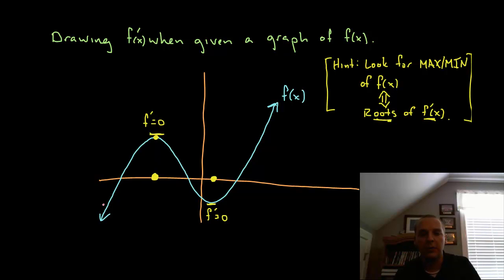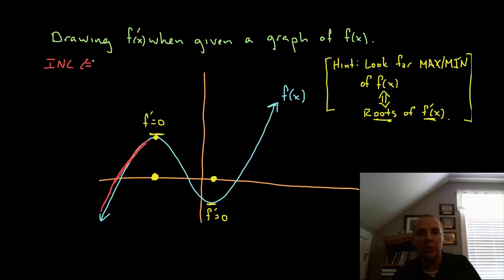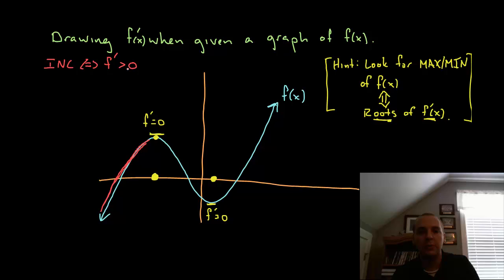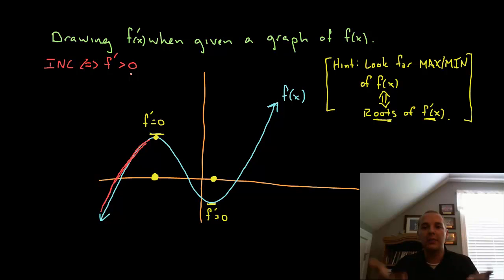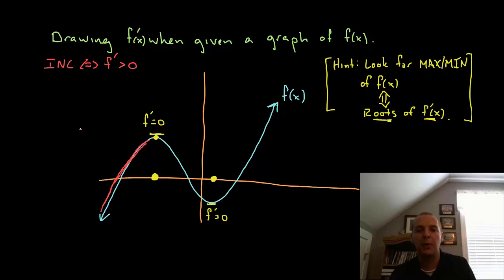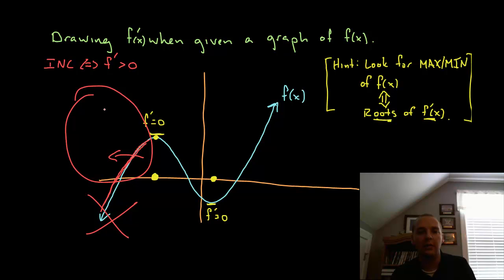Notice that before this first yellow point the graph is increasing — going upwards. Now what does that infer about the derivative? Well, if your graph is increasing, that is equivalent to saying that f prime is positive. You have positive slopes so your original function is increasing. So if your derivative is positive, it just needs to be hanging out above the x-axis — it needs to have positive y values. I did not say that the derivative's slope has to be positive, just the derivative's y values themselves have to be positive.